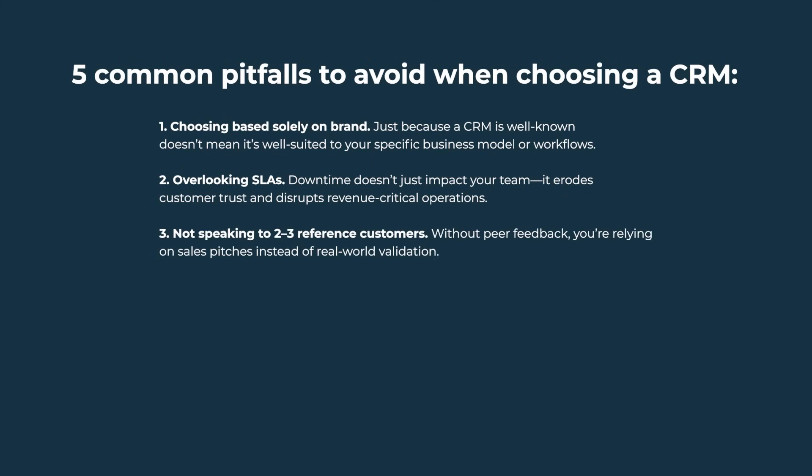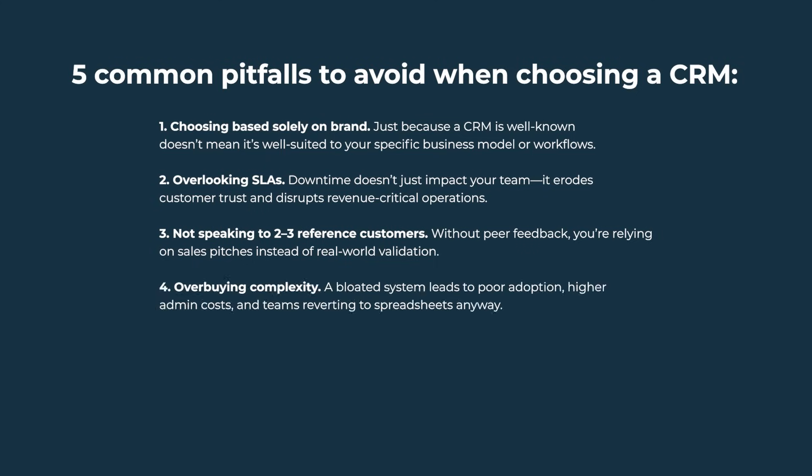Number three: not speaking to two or three reference customers. Without peer feedback, you're relying on sales pitches instead of real-world validation. Number four: overbuying complexity. A bloated system leads to poor adoption, higher admin costs, and teams reverting to spreadsheets anyway.